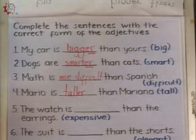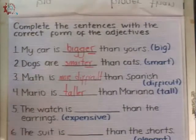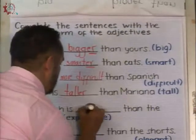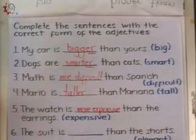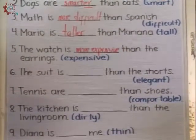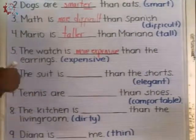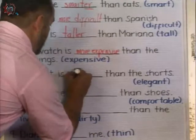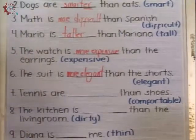Number five: The watch is ___ than the earrings — adjective: expensive. Three sounds — it's a long adjective. So it's more expensive. Number six: The suit is ___ than the shorts — adjective: elegant. Three sounds, right? This is a long adjective too. More elegant. That's right.